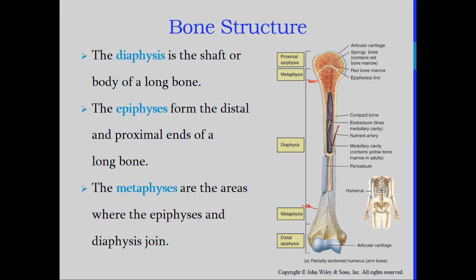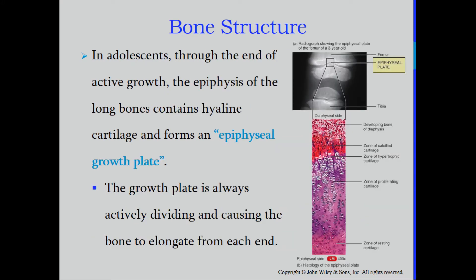The ends of the bone are referred to as the epiphyses. Because there are two ends, the end closest to the attachment to the body is the proximal epiphysis — proximal meaning closest to the attachment. The other end is the distal epiphysis, furthest from the attachment. The area connecting the diaphysis to the epiphyses is the metaphysis — the proximal metaphysis and the distal metaphysis.